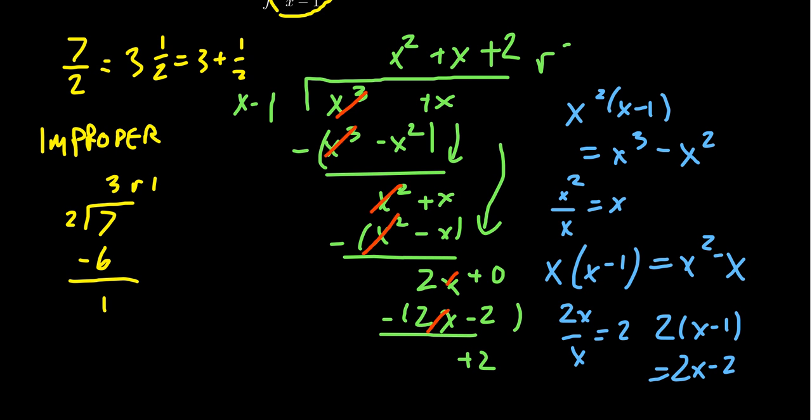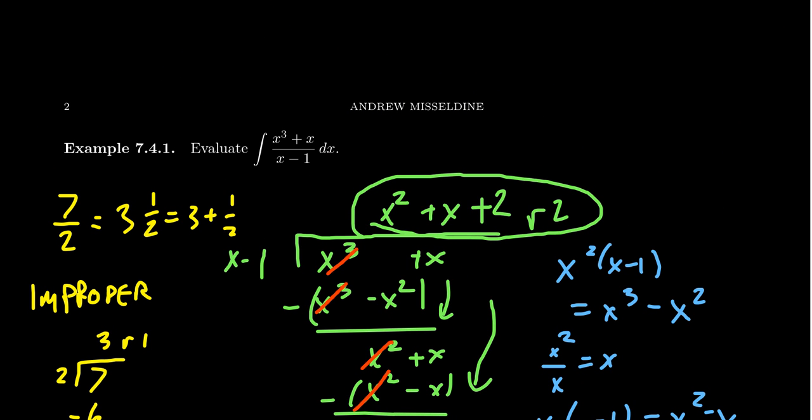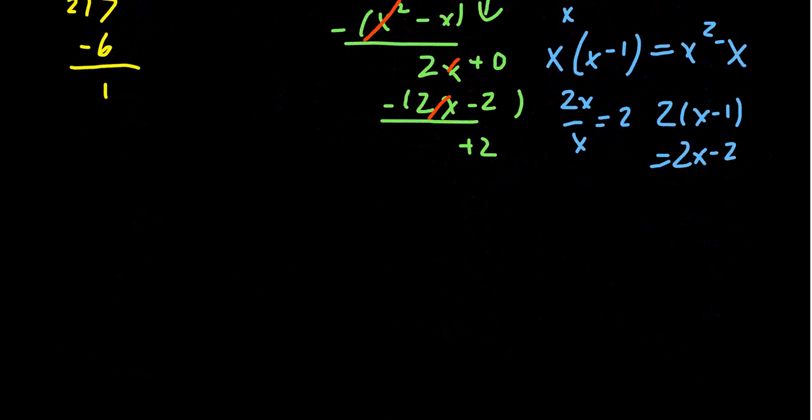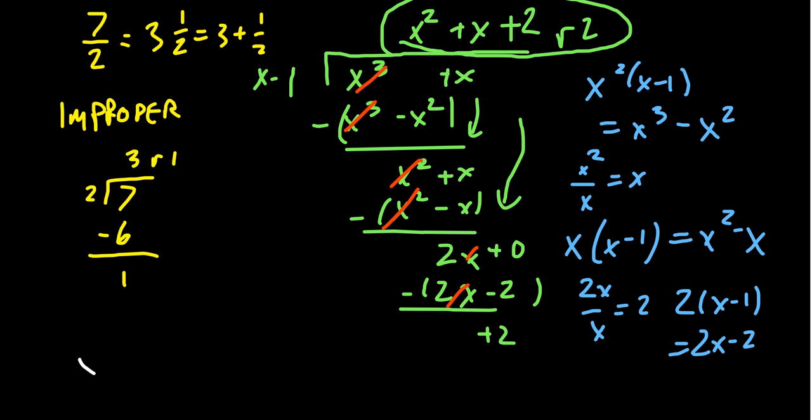And this is going to be our remainder term. So it took us a while here. But x cubed plus x divided by x minus 1 turned out to be this thing right here. x squared plus x plus 2 with the remainder 2. So what does that mean for us? Let's see how much space I have at the top. I'll erase some of these things right here. So what we now can see is that through the long division we just did there. And I'll bring it so it's on the screen again so we can see what we're doing here.